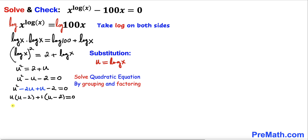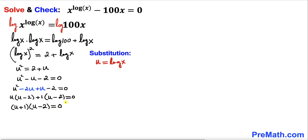Factoring out, we get (u + 1)(u − 2) equals zero. Separating the factors gives u plus 1 equals 0, and u minus 2 equals 0.